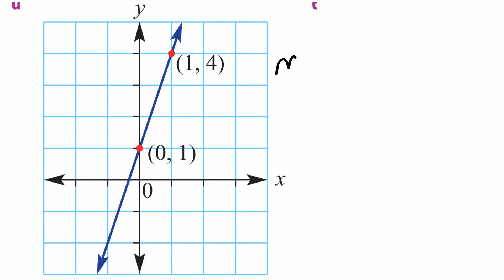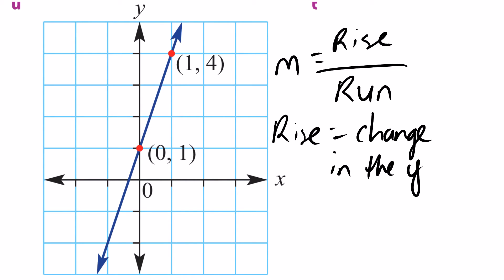Now, the formula to find the gradient, m equals rise over run. Now, rise can be described as the change in the y-axis and run can be described as the change in the x-axis. So I'll show you now how to find the change in the y-axis and the change in the x-axis so we can then determine the gradient of this line.